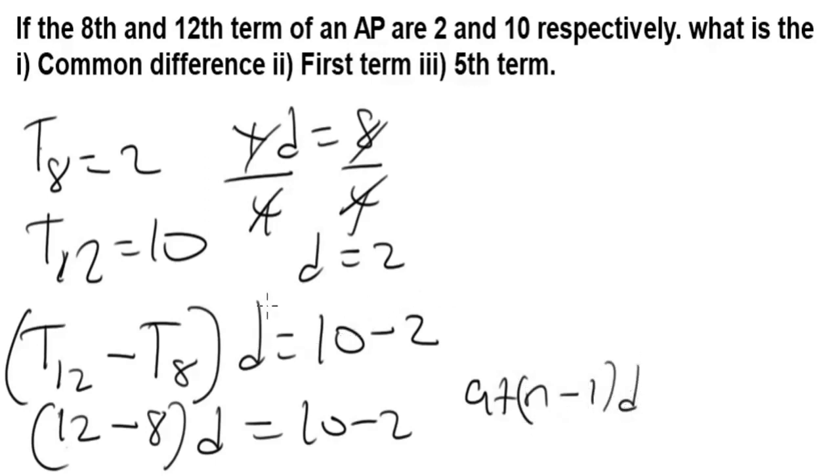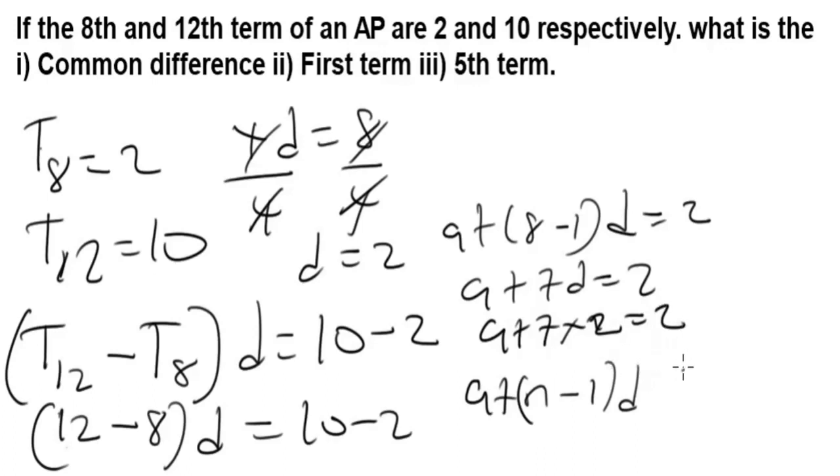Since we have the 8th term and 12th term, let's use the 8th term. T8 equals a plus (8-1)d equals 2, which is a plus 7d equals 2. Now that we have the common difference to be 2, it becomes a plus 7 times 2 equals 2, which is a plus 14 equals 2. Cross over, so a will be 2 minus 14, which gives us minus 12.